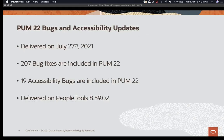207 bug fixes are included in PUM 22, of which 19 are accessibility bugs. PUM 22 is delivered on PeopleTools 85902.